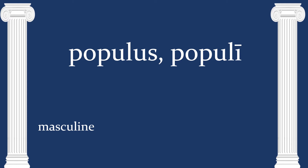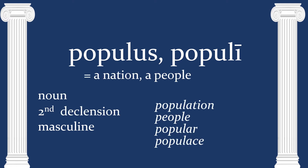Next we have a word we've seen before: populus, populi, a masculine noun of the second declension. It just means a nation or a people, and it's where we get words like population, people, popular, and populus. It's a very useful word.